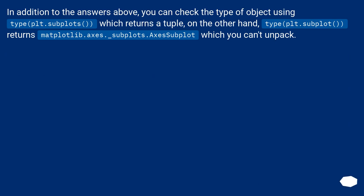In addition to the answers above, you can check the type of object using type(plt.subplots), which returns a tuple. On the other hand, type(plt.subplot) returns matplotlib.axes._subplots.AxesSubplot, which you can't unpack.